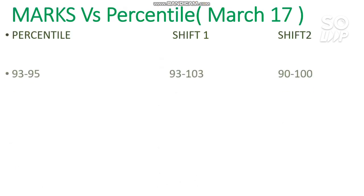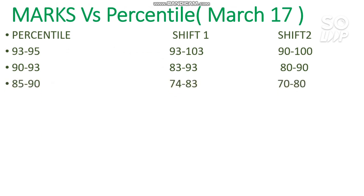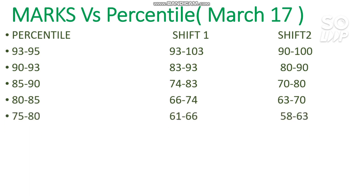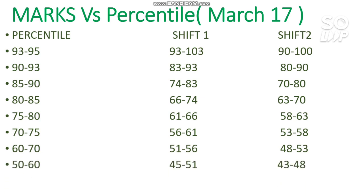For 95 to 96 percentile you need to score 103 to 118 in Shift 1. For 93 to 95 you need to score 93 to 103 marks. For 90 to 93 you need to score 83 to 93. For 85 to 90 it is 74 to 80, for 80 to 85 it is 66 to 74, for 75 to 80 it is 61 to 65, for 60 to 70 it is 51 to 56, and for 50 to 60 percentile you need to score 45 to 51. For 40 to 50 percentile you need to score 40 to 45.